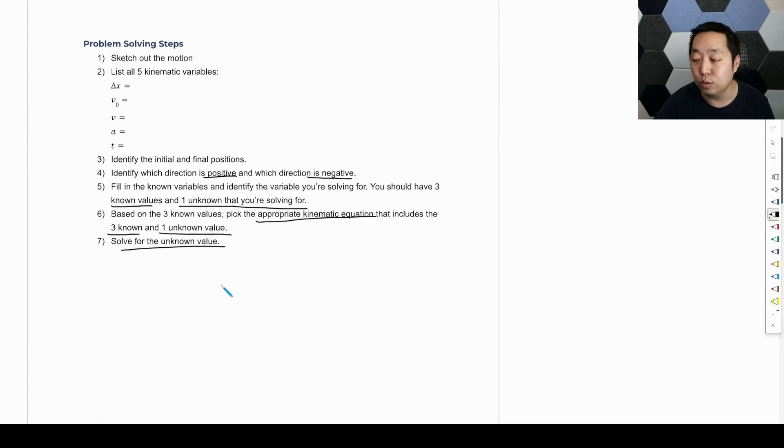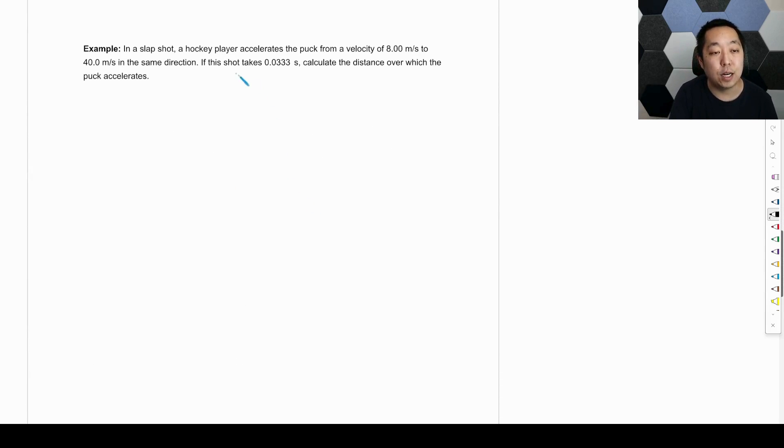And so let's go through a few examples here. So in a slap shot, a hockey player accelerates the puck from a velocity of eight meters per second to 40 meters per second in the same direction. The shot takes this. Calculate the distance over which it accelerates. So we're going to list out. So first of all, you're going to draw the motion. So we have a puck.